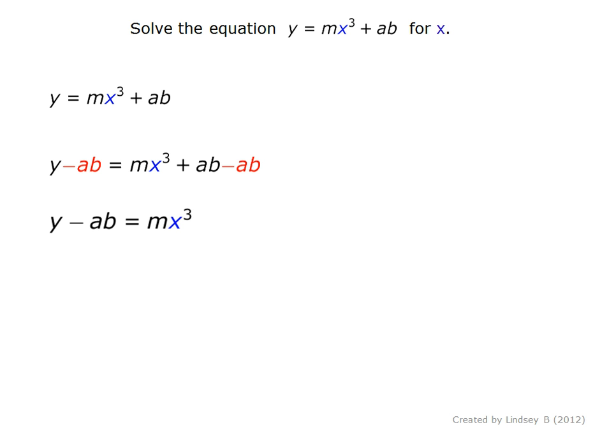Next, we will move m to the other side of the equation. We'll do that by dividing both sides by m. So we wind up with y minus ab divided by m equals x cubed.